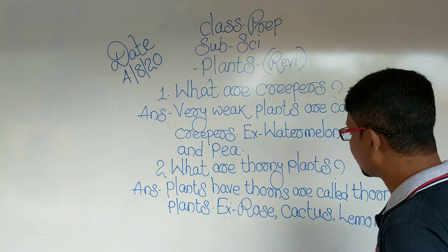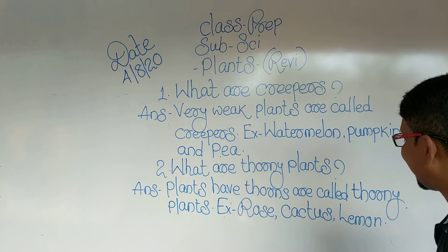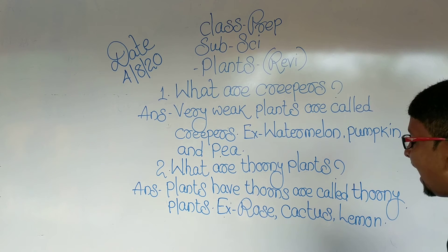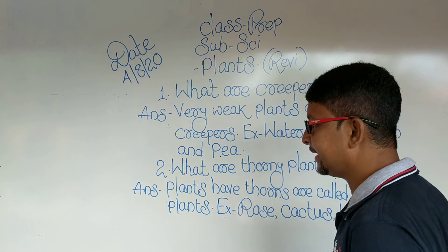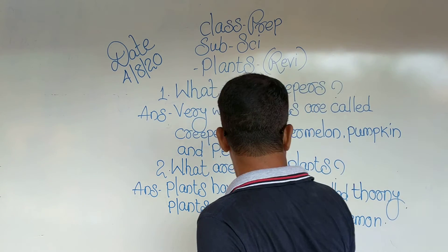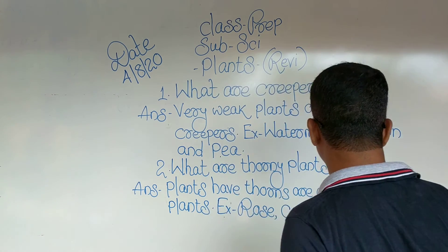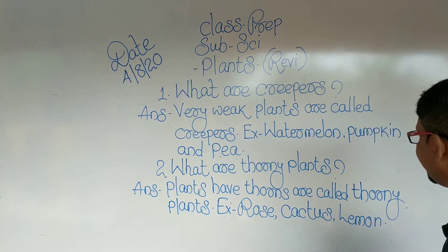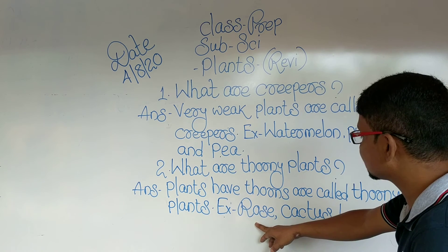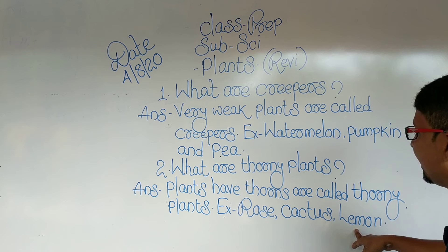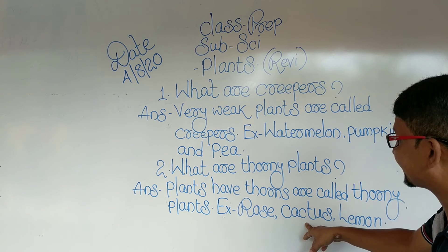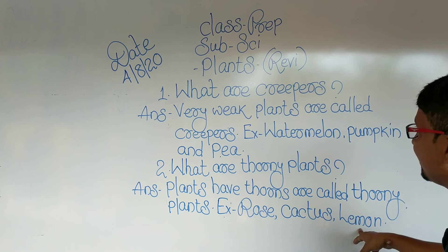Example: rose, cactus, lemon. Spelling: R-O-S-E, rose. C-A-C-T-U-S, cactus. L-E-M-O-N, lemon. Rose, cactus, lemon.